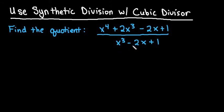So for this one, what we want to do is we're going to divide x to the 4th plus 2x cubed minus 2x plus 1 by x cubed minus 2x plus 1.